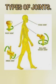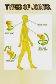There are four types of joints. The first one is ball and socket joints. The second one is pivotal joints. The third one is hinge joints. And the fourth one is fixed joints.